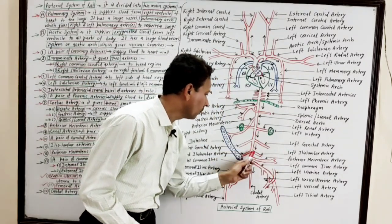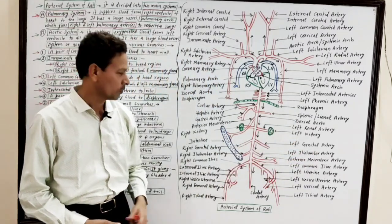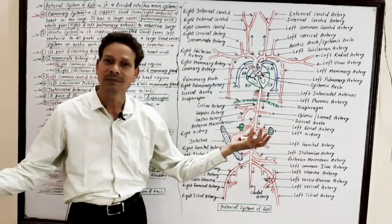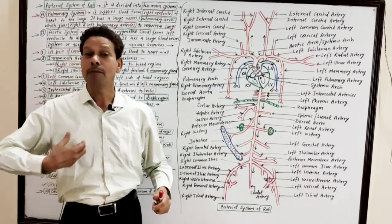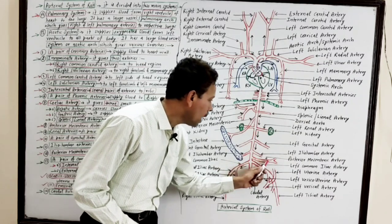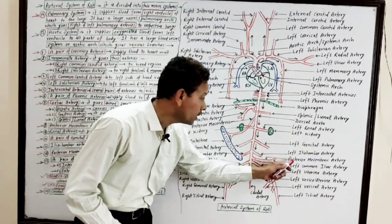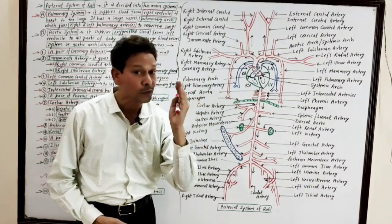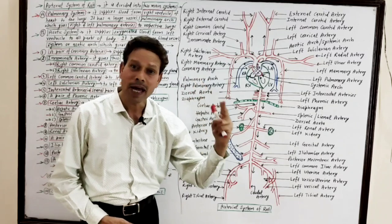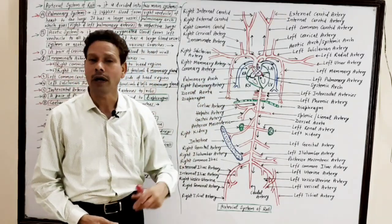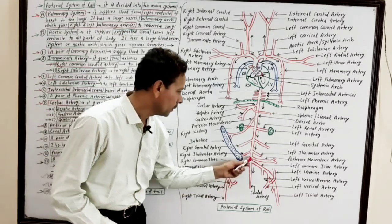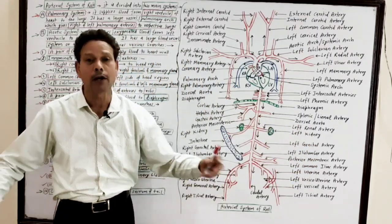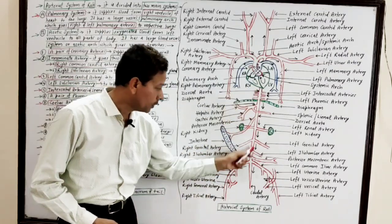Then a pair of iliolumbar arteries in the lower part of the abdomen carry oxygenated blood to the abdominal wall. Then a single large posterior mesenteric artery carries oxygenated blood to the lower parts of the digestive tract — specifically the large intestine, including the colon and rectum. Then a pair of common iliac arteries in the posterior region of the dorsal aorta carry blood to the pelvic region.